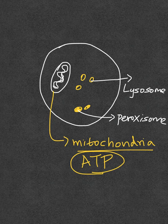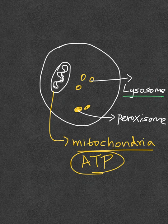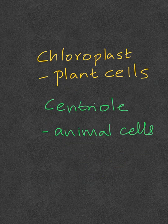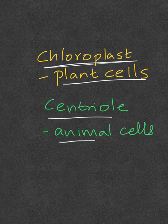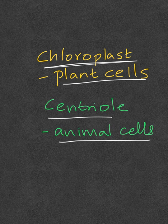Other structures within the cell include lysosomes, which help break down waste products, and peroxisomes, which help detoxify some contents in the cell. The chloroplast is present only in plant cells and helps in cellular respiration in plants. The centriole is present in animal cells and helps build microtubules that form the cytoskeleton of the cell.